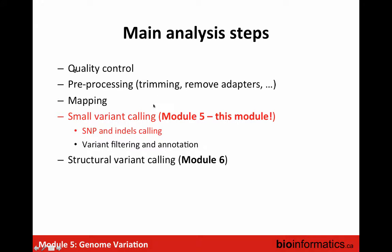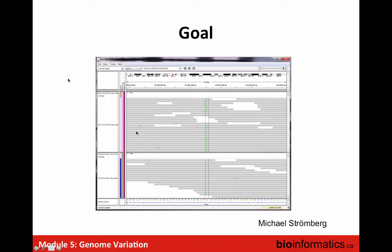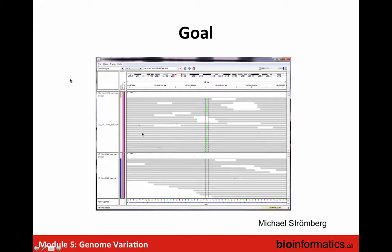This module: we want to call single nucleotide polymorphisms and indels. Yesterday we were doing this visually. Here's an example - the top track is probably a tumor, the bottom is from the same individual's blood. In the blood you have near-perfect matching to the reference with only sparse errors. In the tumor there's clearly a difference at that position - you can see it visually.